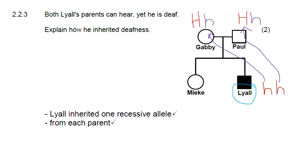If we look at the answer here at the bottom that means that Lyle inherited one recessive allele, that's our first mark, from each of his parents. And it's going to be important to say not just he inherited it from his parents. You don't have to say that he got one from Gabby and he got one from Paul.